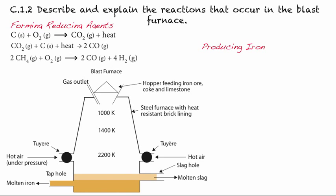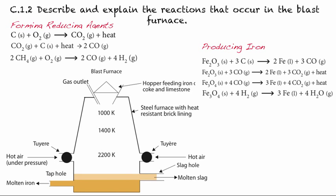Now we get to producing iron — this is the redox reaction that happens. First of all, the coke that you put in can directly react to isolate our iron. That iron will be liquid and then flow down, forming carbon monoxide. We can see that carbon monoxide can be a reducing agent, and it's producing liquid iron.